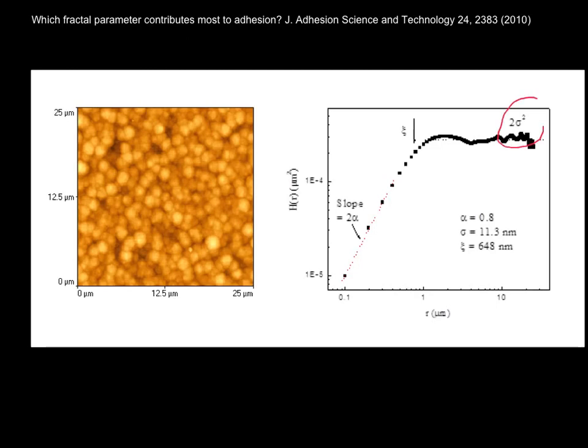One is the surface roughness, sigma. Another is the roughness exponent, alpha. And the third is the lateral correlation length, c.